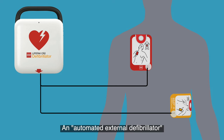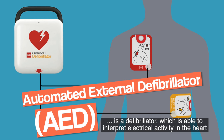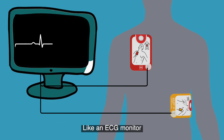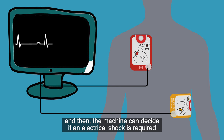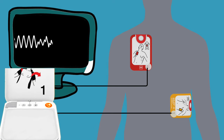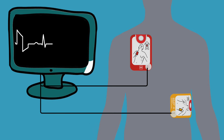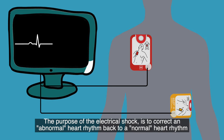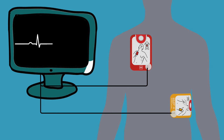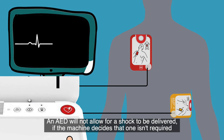An automated external defibrillator, or AED, is a defibrillator which is able to interpret electrical activity in the heart like an ECG monitor, and then the machine can decide if an electrical shock is required. The purpose of the electrical shock is to correct an abnormal heart rhythm back to a normal heart rhythm. An AED will not allow for a shock to be delivered if the machine decides that one isn't required.